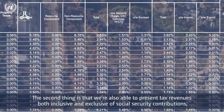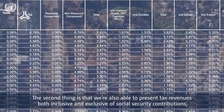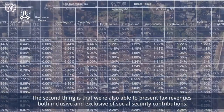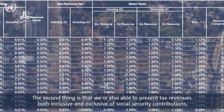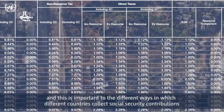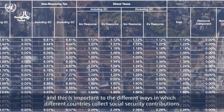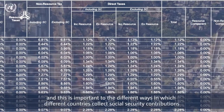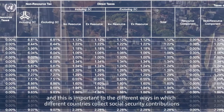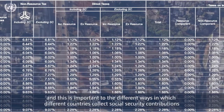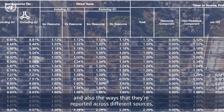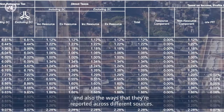The second thing is that we're also able to present tax revenues both inclusive and exclusive of Social Security contributions. This is important due to the different ways that different countries collect Social Security contributions and also the ways that they're reported across different sources.